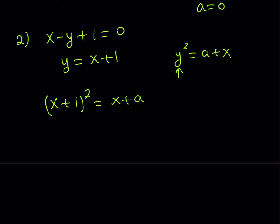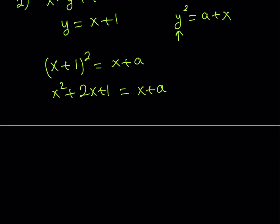But you've got to remember: x is greater than or equal to 0, and y is greater than or equal to 0. So we have those conditions in place. Let's go ahead and expand this. This gives us x squared plus 2x plus 1 is equal to x plus a, and then we get x squared plus x plus 1 minus a is equal to 0.